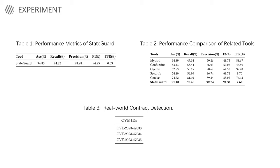In conclusion, State Guard offers a promising solution to the challenge of detecting state derailment defects in DEX smart contracts. We believe this work is a significant contribution to enhancing the security and robustness of decentralized exchanges. We invite you to read our paper for a more detailed understanding of State Guard and its potential implications.